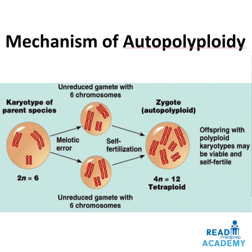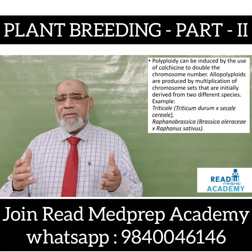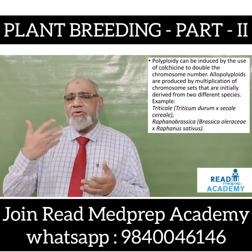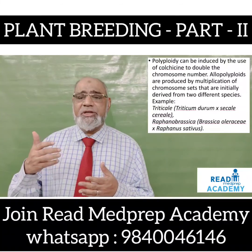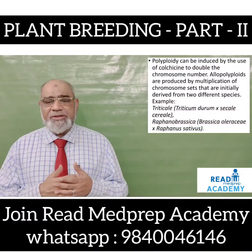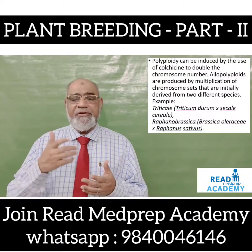When chromosome number is doubled within the same plant it is called autopolyploid. The mechanism: the parent species has a karyotype of 2N=6; when gametes with 6 chromosomes each are produced due to meiotic error, fertilization of these two unreduced gametes results in an autopolyploid zygote of 4N=12, which is a tetraploid. Offspring with polyploid karyotypes may be viable and self-fertile. Polyploidy can be induced by the use of colchicine to double the chromosome number. Allopolyploids are produced by multiplication of chromosome sets initially derived from two different species — for example, Triticale from Triticum durum and Secale cereale, and Raffanobrassica from Brassica oleracea and Raphanus sativus.